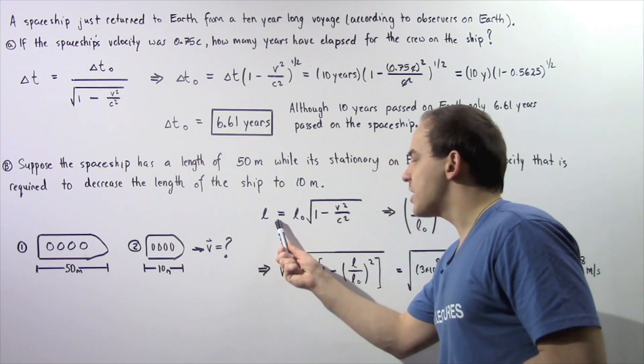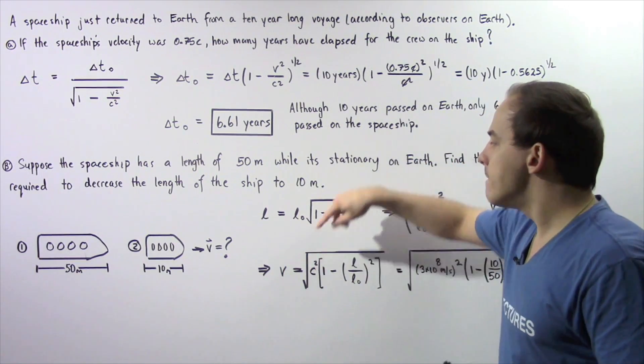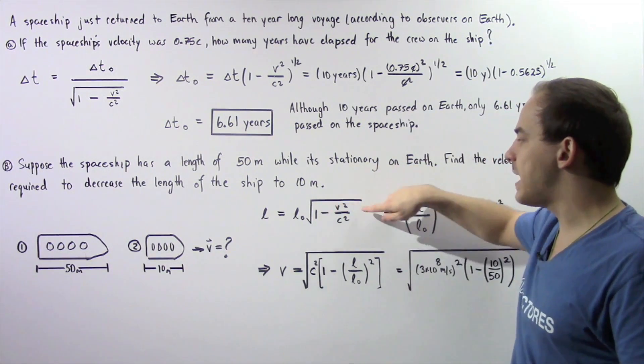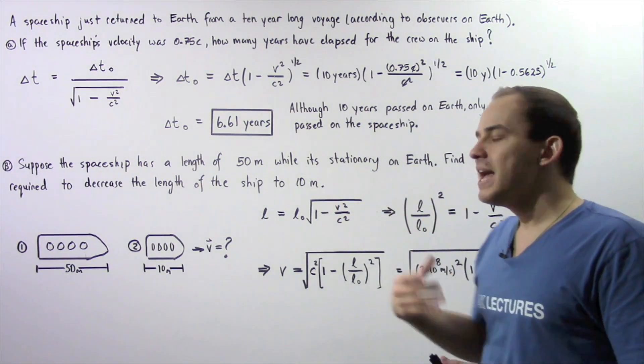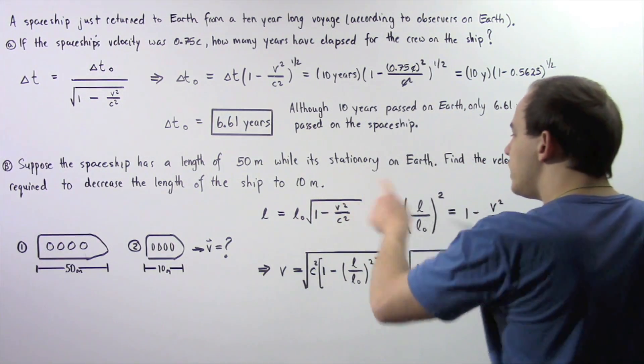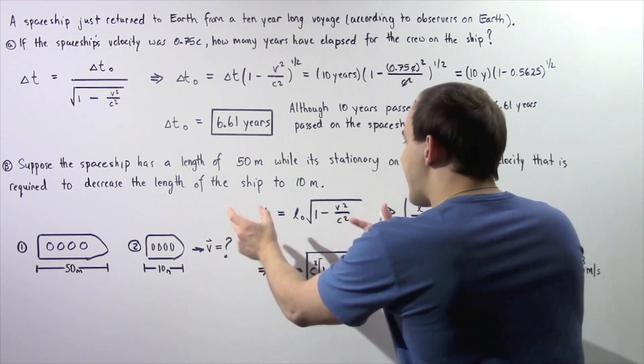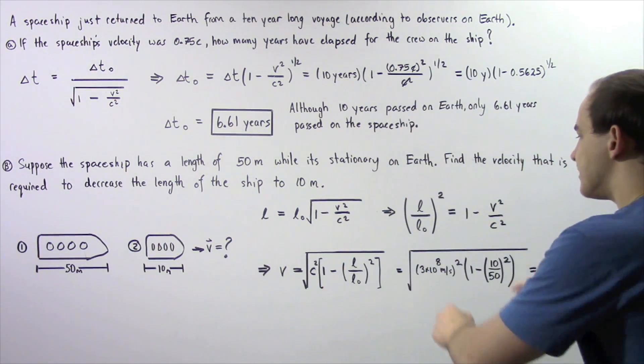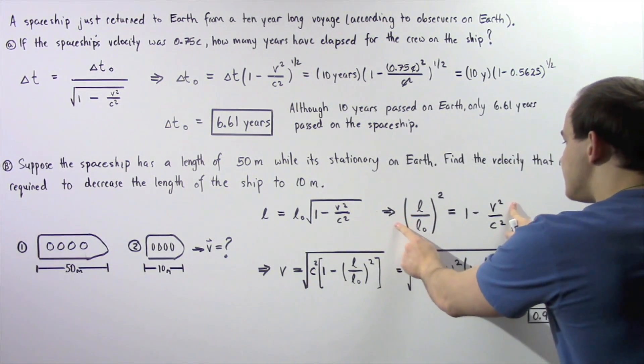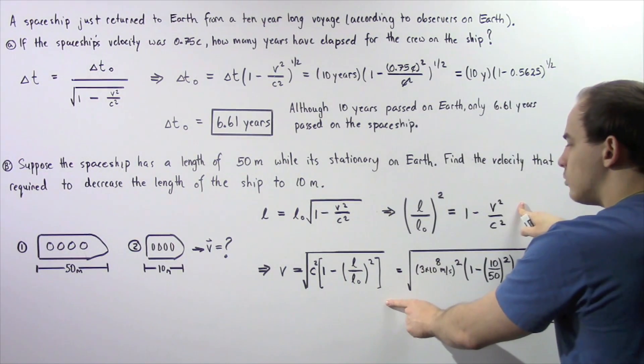Our contracted length L is equal to our initial length L0 multiplied by the square root of 1 minus V squared divided by C squared, where V is the velocity that we're looking for. We want to solve for V. Let's bring L0 to this side and take the square of both sides. Finally, if we take this equation and solve for V, we get the following equation.